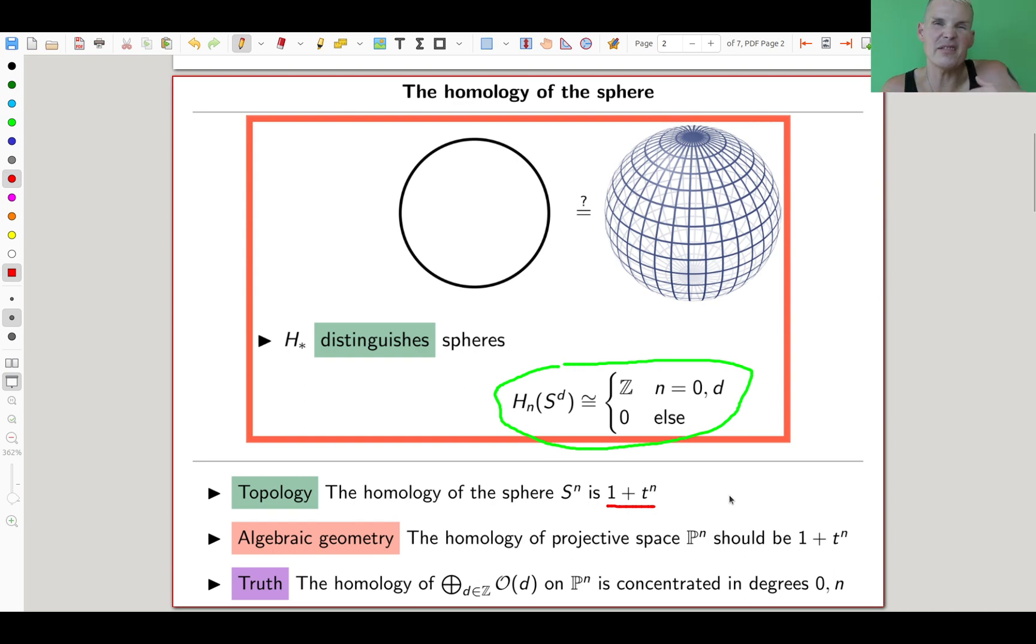What is the analog of the sphere in algebraic geometry? The analog of the sphere is the projective space. So whatever kind of homology we're trying to cook up, the homology of projective space should look very similar, and that's essentially almost true. It gets a bit more complicated. The homology of the sheaf on projective space is concentrated in two degrees, and in one degree it's a polynomial ring. In this sense, the homology is really the same, essentially the same idea in topology and algebraic geometry. It's just almost the same.